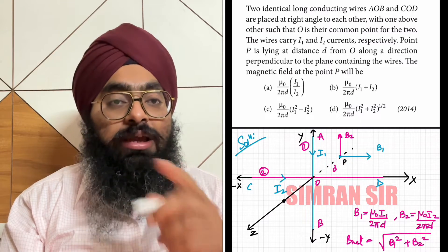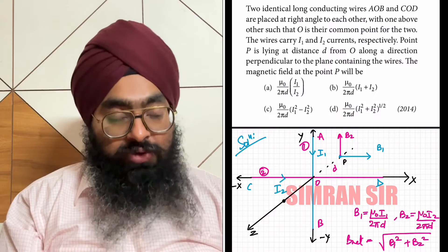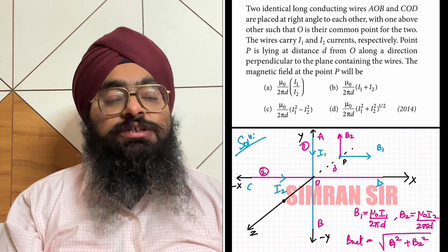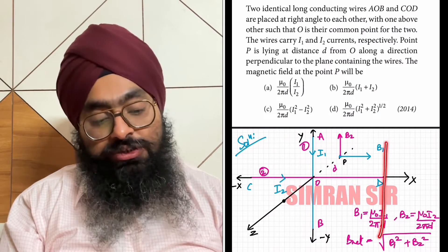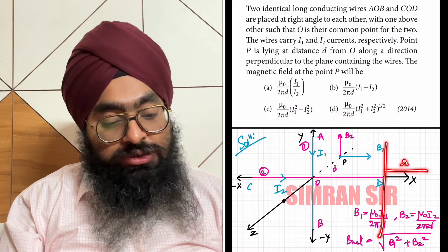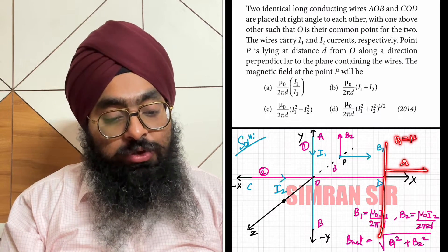These two wires produce a magnetic field because they are infinite wires. The magnetic field at perpendicular distance d from an infinite wire is given by the formula mu_0*i/(2*pi*r).